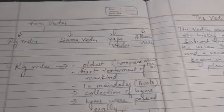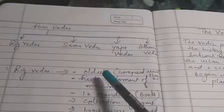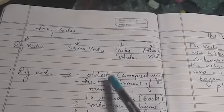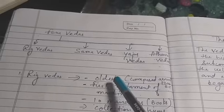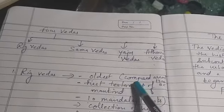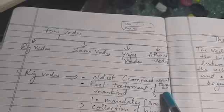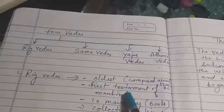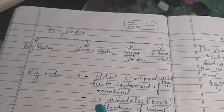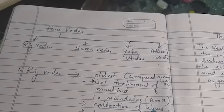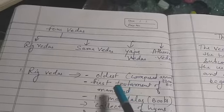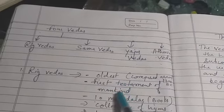First, the Rig Veda. The most important points about the Rig Veda are written here — you can also make notes in your rough copy. The Rig Veda is called the oldest religious text, or the oldest Veda. It was composed around 1700 BC. The Rig Veda is also called the first testament of mankind because it is a collection of hymns — a collection of songs.